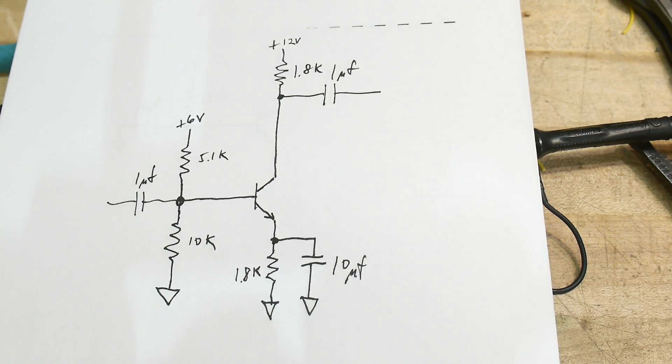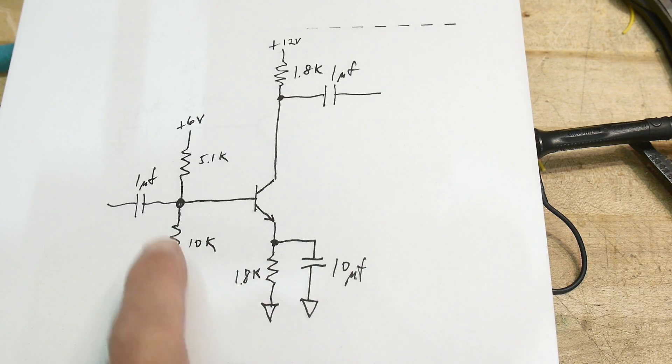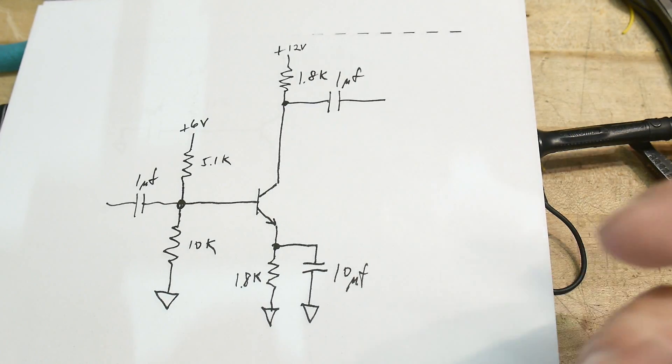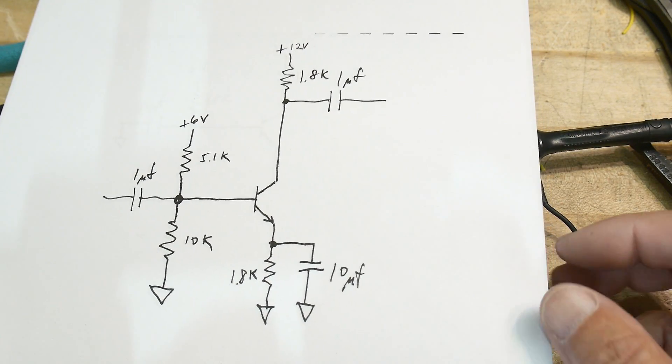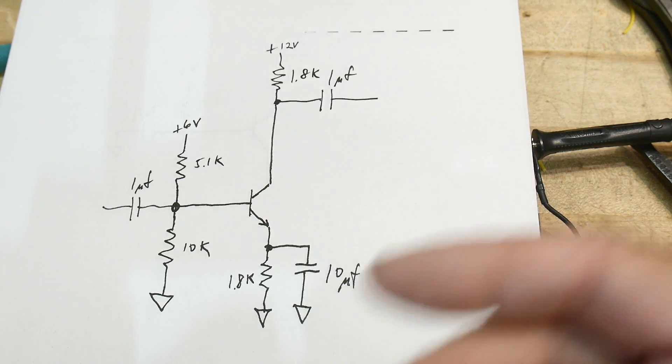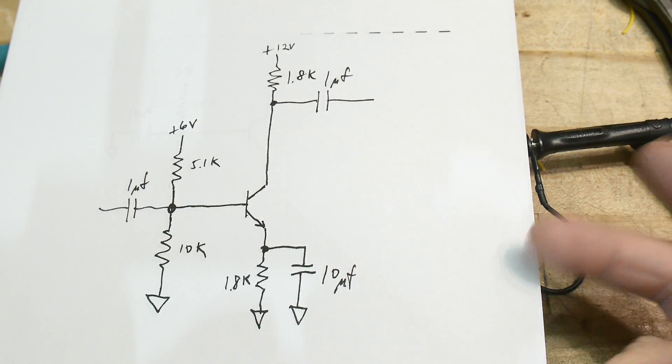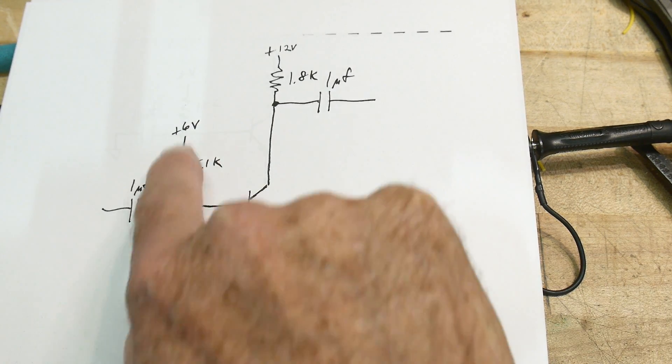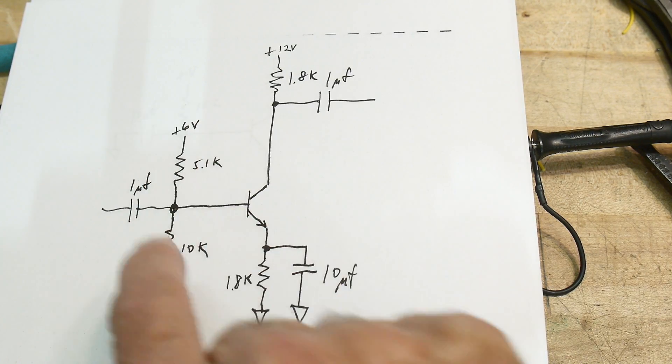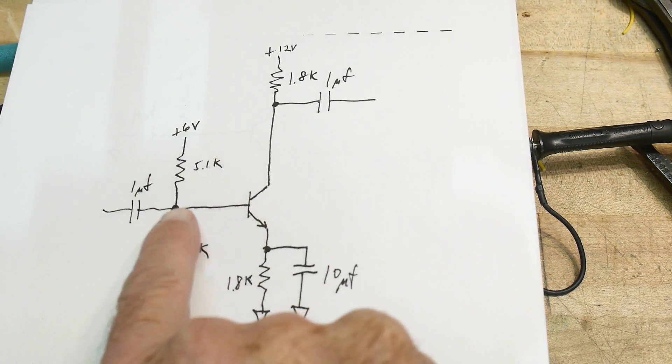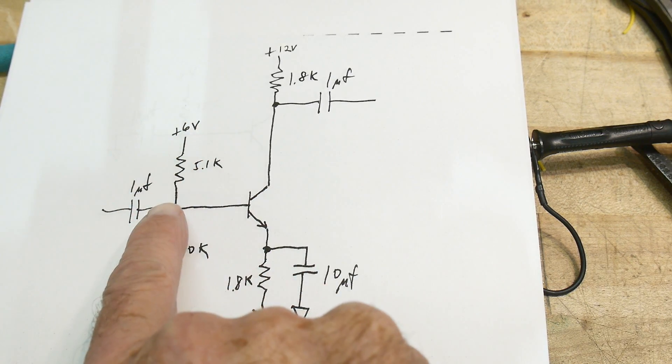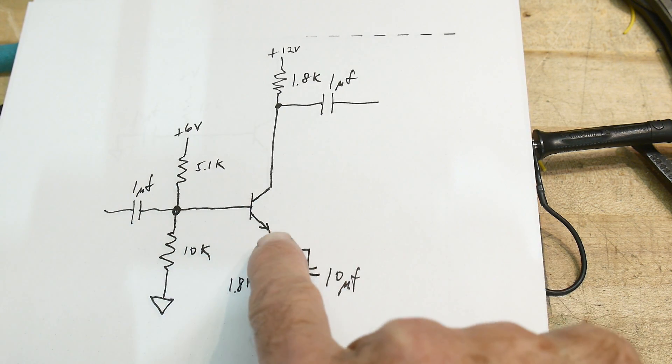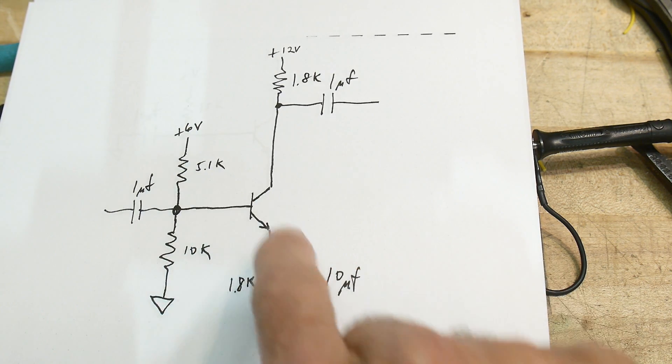So this is a common emitter amplifier. You do some DC biasing and you set this transistor up and then you put some wiggles here and some wiggles come out here. So we have to do two different things when we're looking at these amplifiers. We have to do a DC analysis and we have to do an AC analysis.